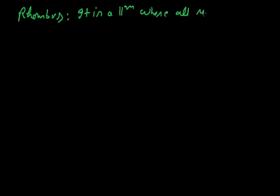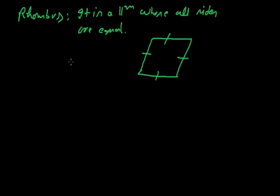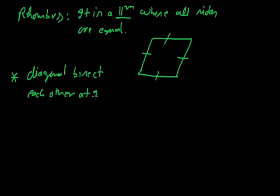Rhombus is a parallelogram whose all sides are equal. Because it is a parallelogram, it acquires all the properties of the parallelogram — opposite sides equal, opposite angles equal, and the diagonals bisect each other. Rhombus has a special property: the diagonals bisect each other at 90 degrees.